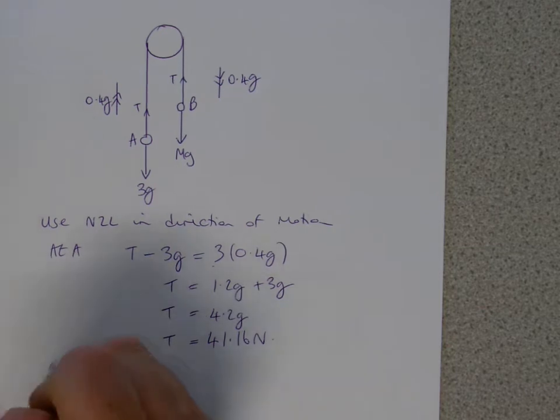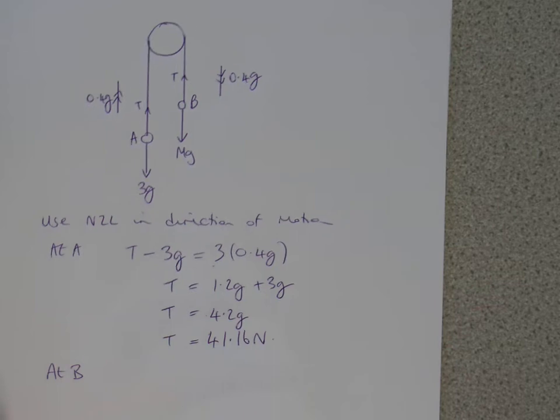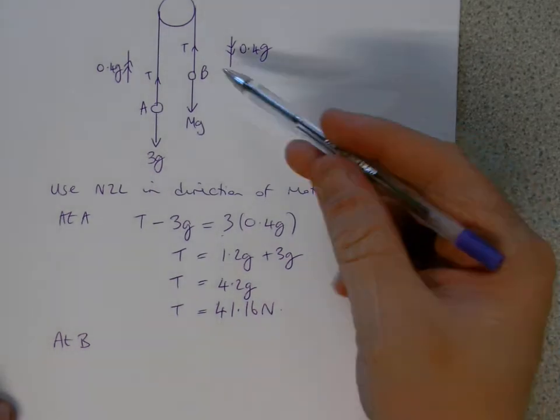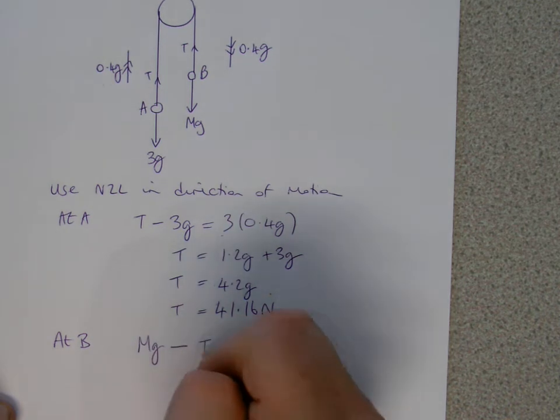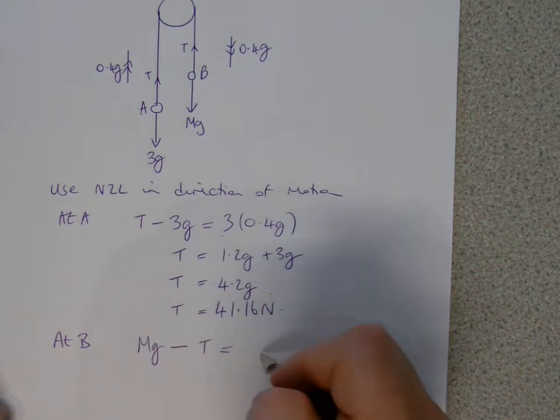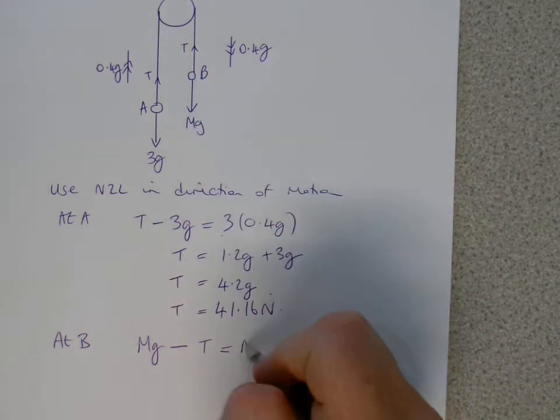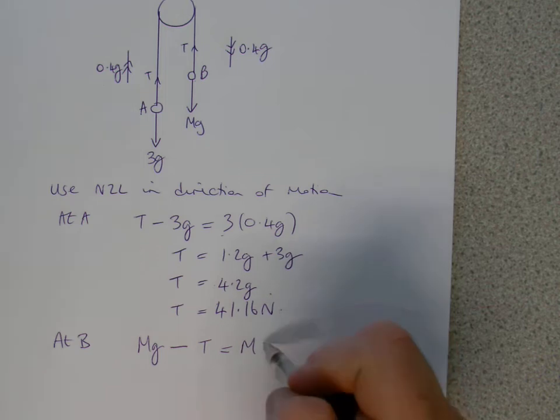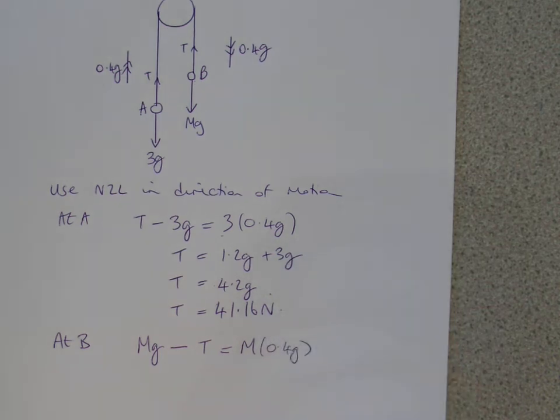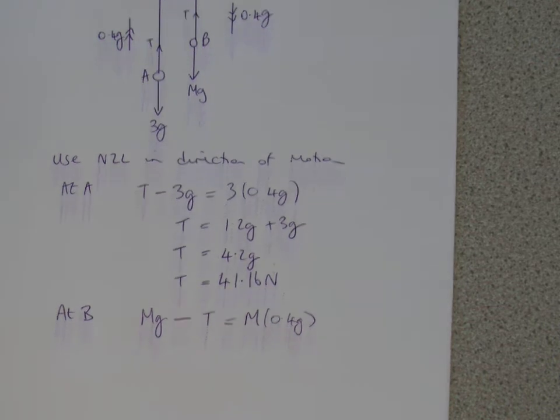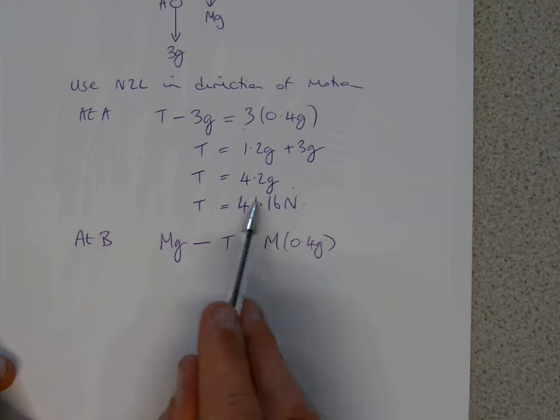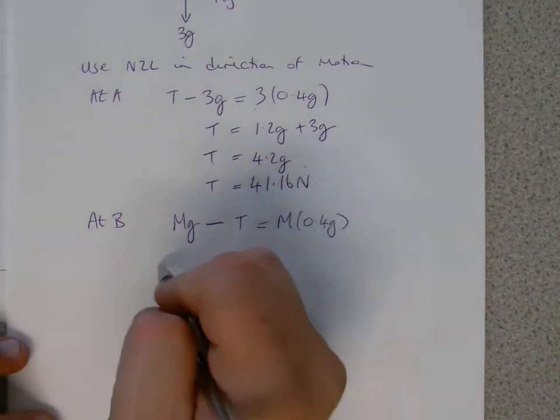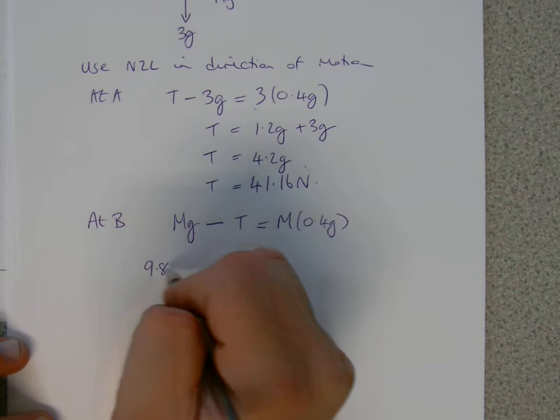Now if we resolve at B then, we can then work out what that mass is. So it's going down, so the weight is pulling it down, so that's the leading force, and then we take away the resistance of the string, and that will equal then to the mass of particle B, which is just M, times then the acceleration is going out, which is 0.4G. So using the second law there, so we know now the tension is 41.16, so we can put that in, and we know G is 9.8, so 9.8M.